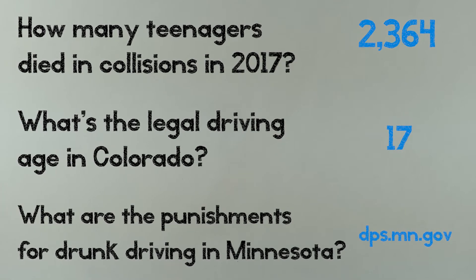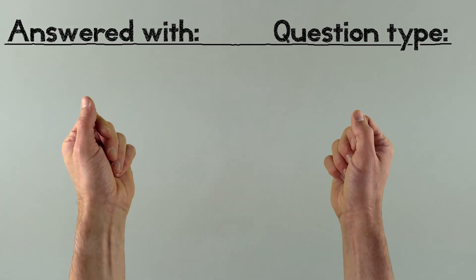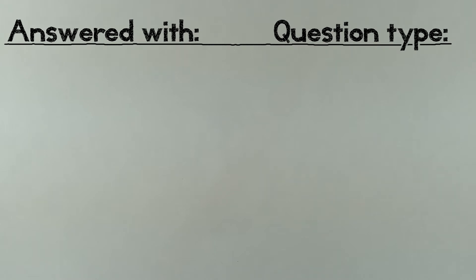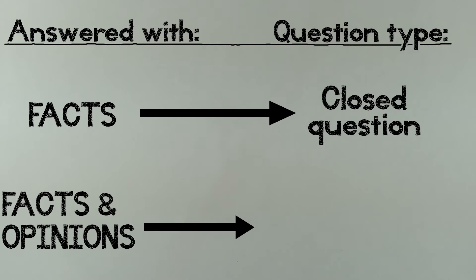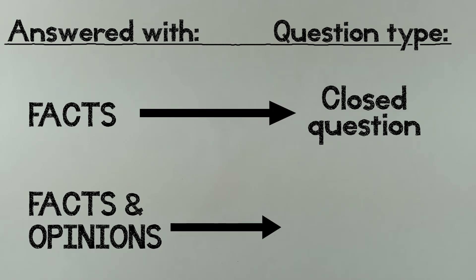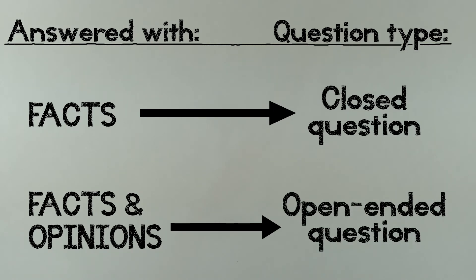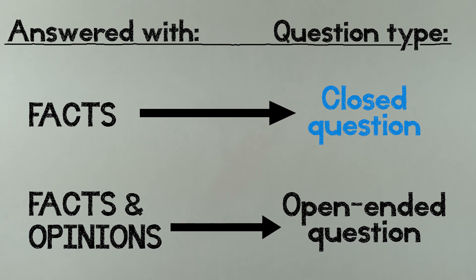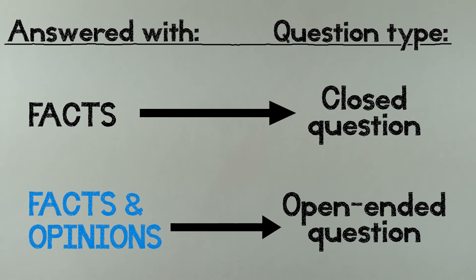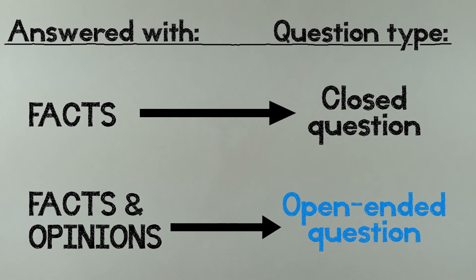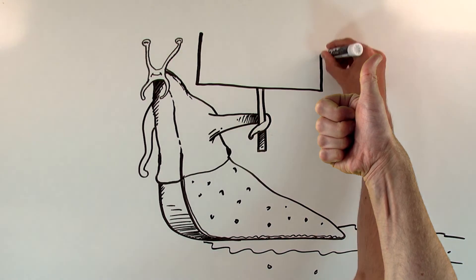So when you're looking at a research question and want to know if it's open-ended or not, remember this: if it can be answered with a fact, it's a closed question. If it can only be answered by a fact combined with an opinion, then it's an open-ended question. If the answer can be a fact, the question is closed and won't make for a good paper on its own. If the answer requires facts and opinions, the question is open — and open questions make for good papers.